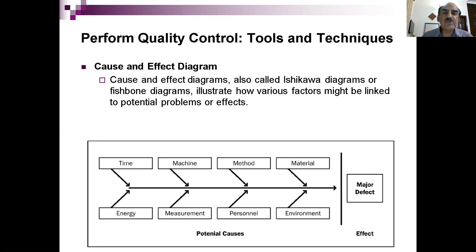One of the tools used for quality control is the cause-and-effect diagram — also called the fishbone diagram or Ishikawa diagram. It shows that major defects may come from material, method, machine, time, energy, measurement, personnel, and environment. We can further break down each category — for example, what can be defects in the material — and in this way we can see the relationship between different inputs or factors which can lead to the major defects.